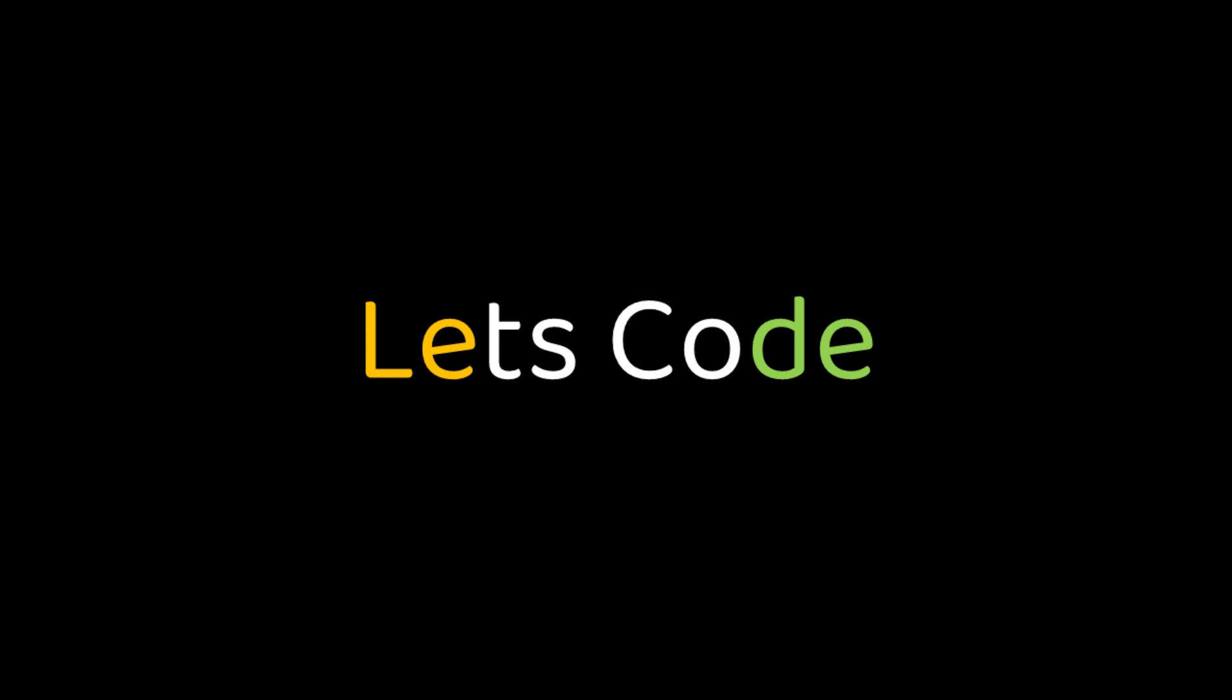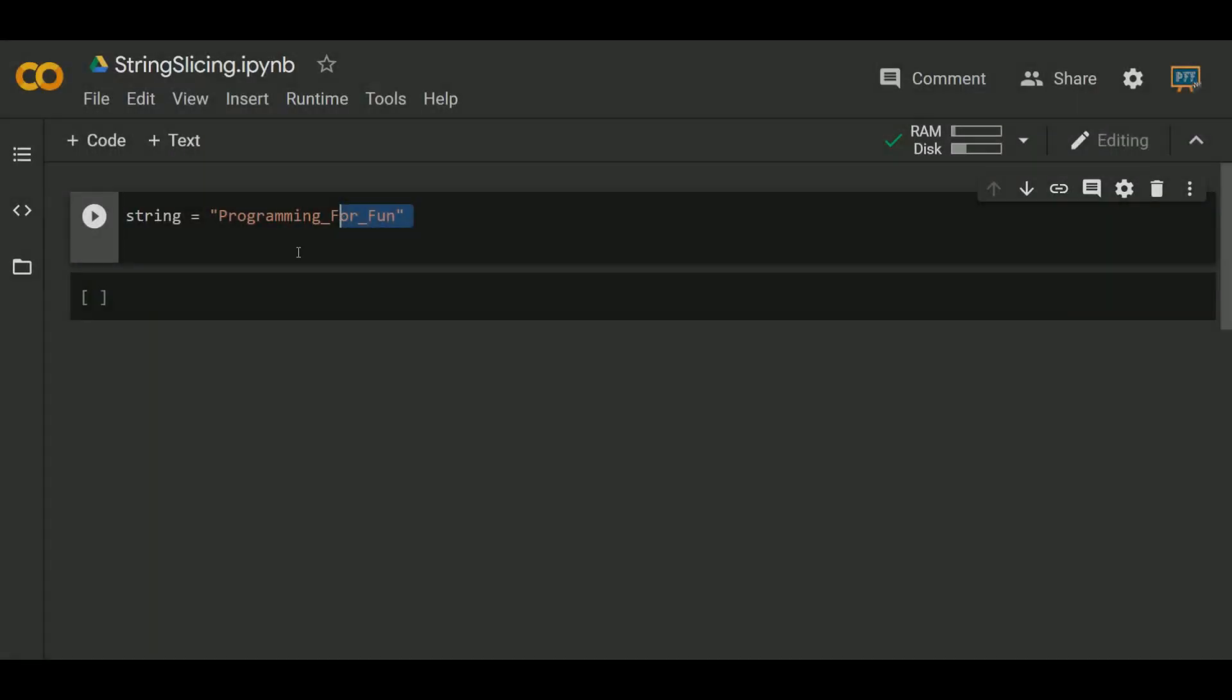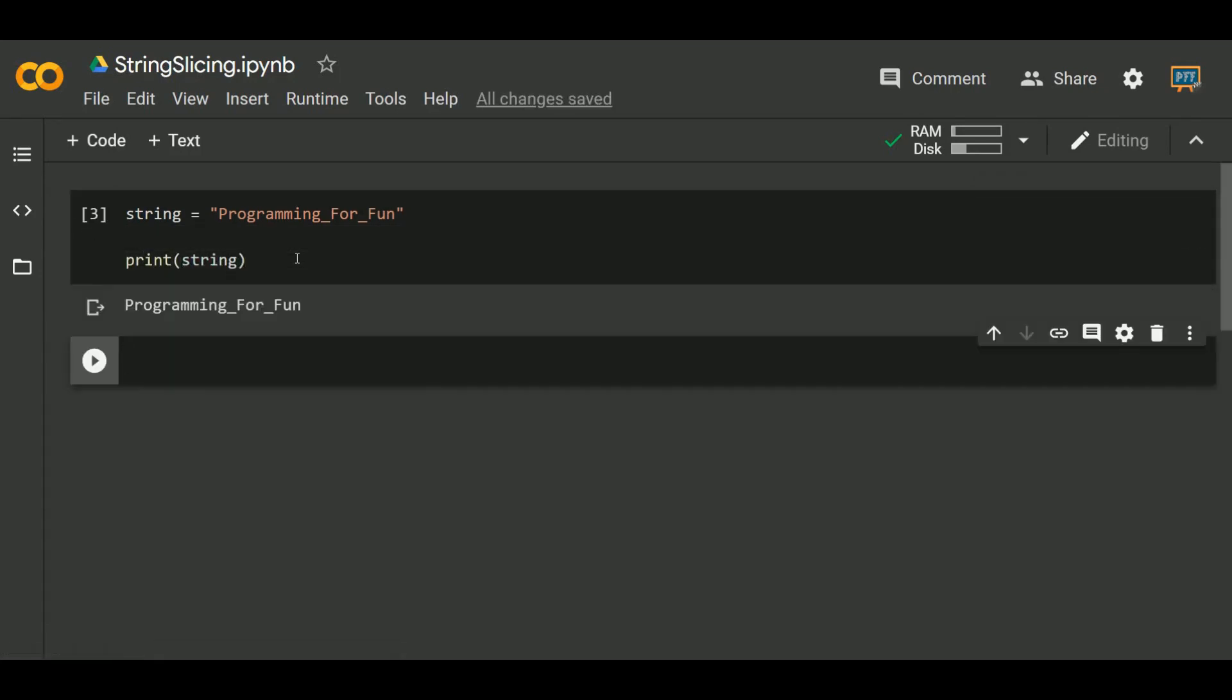Now let's do some more interesting example for better understanding where we will get unexpected outputs. Here, I am assigning the string variable to programming for fun as shown. Let's print this string and we will get programming for fun printed. Let's start slicing.